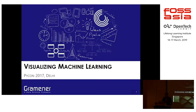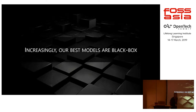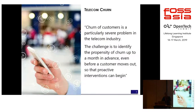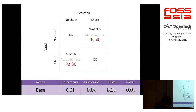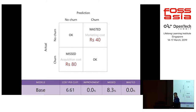Let me start with a problem that we faced right at the beginning. Most of the models that we are creating these days are black box models. There was a telecom company that said they want to predict telecom churn. For every customer that we try and retain, we only have to spend about 40 rupees, but if we lose them and have to reacquire them, it's going to cost about 80 rupees. So if we can get the customers that are going to leave before they leave, we save a lot of money.